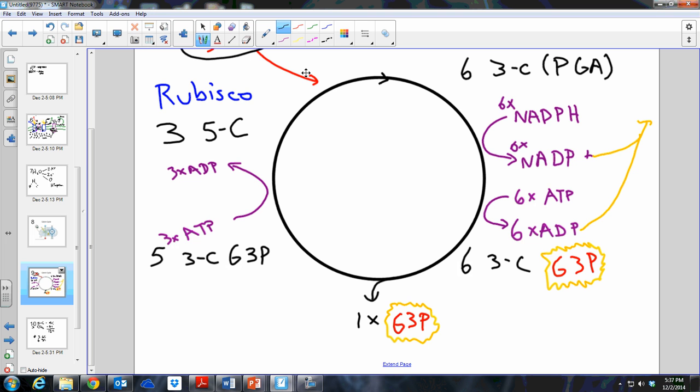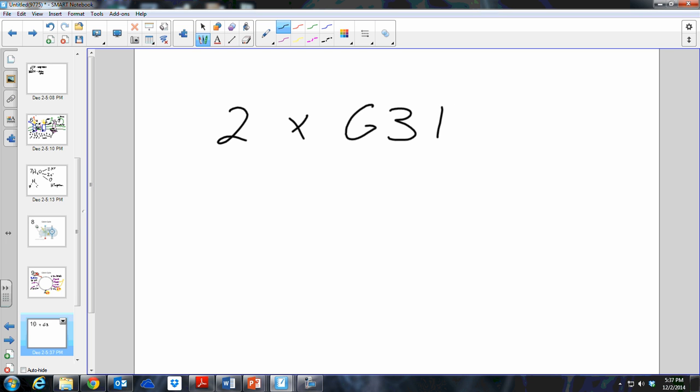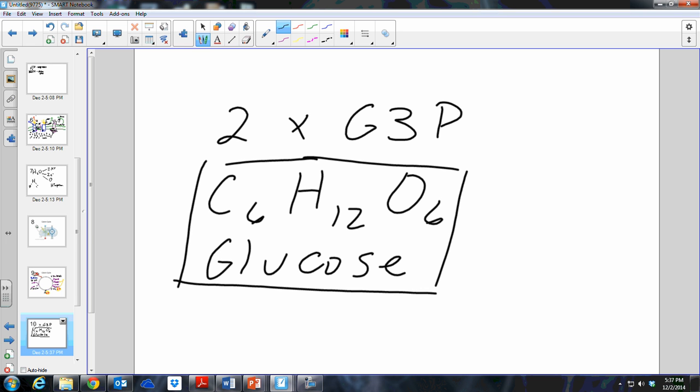Now, this cycle happens twice, and when this cycle happens twice, we have two G3Ps. Two G3Ps both have three carbons apiece, and they will combine together to make this molecule, which is glucose. And this molecule here is the final goal of this process, photosynthesis. From the time that light shone on photosystem II and split the water to the time that the NADPH caught the high-energy electrons and ATP was made from ATP synthase, all of those things are culminating in this one molecule, glucose, which is broken apart by organisms to get energy back out of it, which we will talk about when we do cellular respiration.